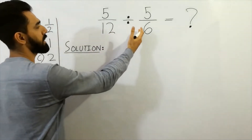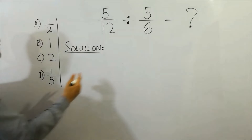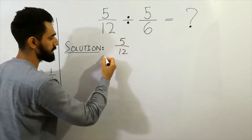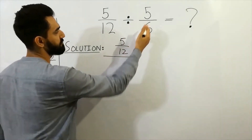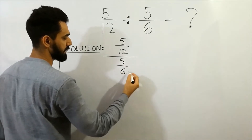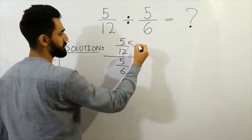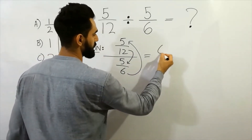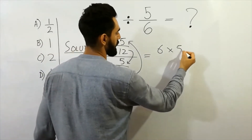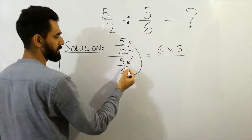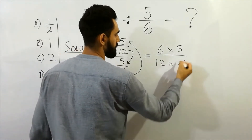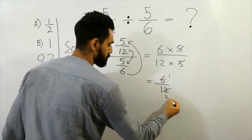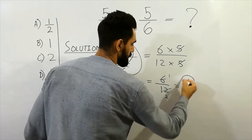Next question: five by twelve divide five by six — which option is correct? First, write five over twelve as it is, then the division sign, then five divided by six. Flip the divisor: six goes to the numerator. Five and five will cancel, giving us six over twelve, which simplifies to one by two. So one by two is the correct option.